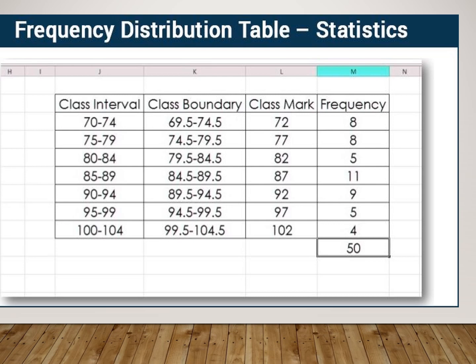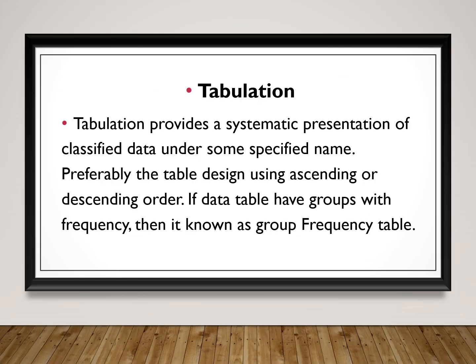The second step is tabulation — we present data in tables in a very systematic way under some specified names, which are actually the names of the variables. Each column is represented by a header that is the name of the variable. The table is preferably designed in ascending or descending order, which is important for systematic presentation, so it will be an array of data.